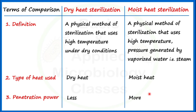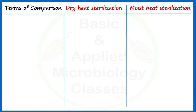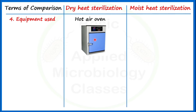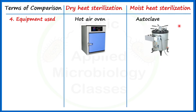The fourth point of difference is the equipment used. To carry out dry heat sterilization in a microbiology laboratory, we most commonly use a hot air oven. And to carry out moist heat sterilization, we use an autoclave.